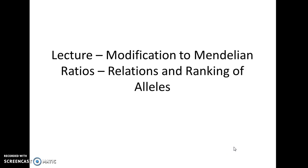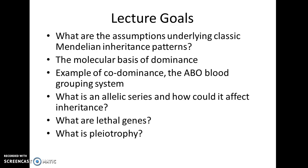This is Dr. Lauren Launin from the Keene State College Department of Biology, continuing the lecture from my genetics class addressing the modification to Mendelian ratios, relations, and ranking of alleles. We just finished talking about the codominance example with the ABO blood grouping system. Now I'm going to talk about an allelic series, lethal genes, and pleiotrophy.